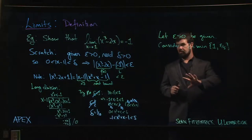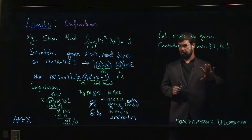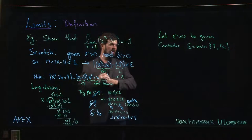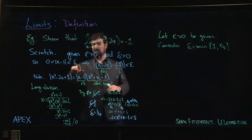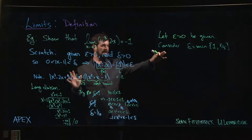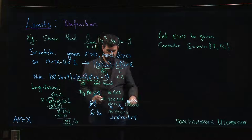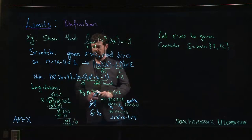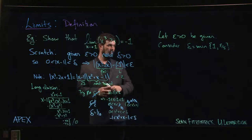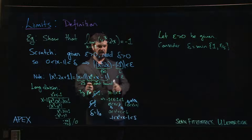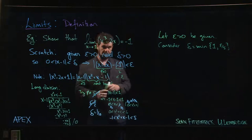From there the write-up is more or less the same as the last video. Let epsilon greater than zero be given, consider delta to be the minimum of one and epsilon over five. Assume that the absolute value of x minus one is less than delta, and show that delta works. You'll use the fact that delta is less than or equal to one to establish that this factor is less than five, and the fact that delta is less than or equal to epsilon over five to establish that this factor is less than epsilon over five, so the whole thing is less than epsilon over five times five, which is epsilon — and then you're done.